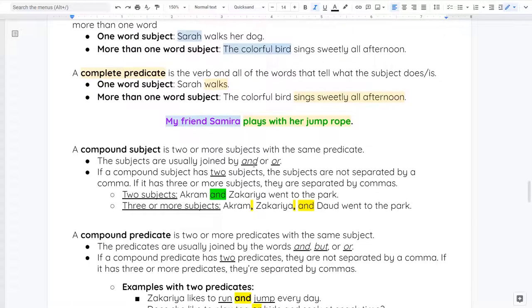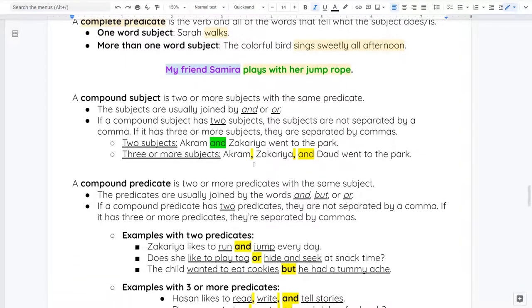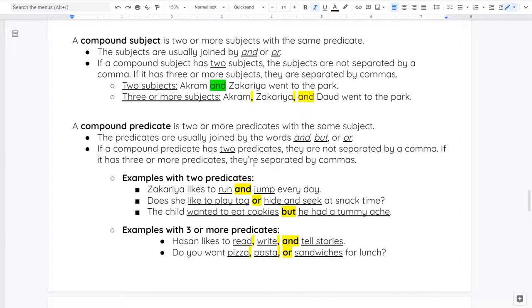We can also have what we call compound subjects and compound predicates. A compound subject is two or more subjects with the same predicate. The subjects are usually joined by the words and or or. If a compound subject has two subjects, the subjects are not separated by commas. If there's three or more subjects, then they are separated by commas. A compound subject that has two subjects: I can say Akram and Zecharia went to the park. So my two subjects are Akram and Zecharia. They're joined by the word and. If there's three subjects or three or more, I'm going to have to start using commas. I can say Akram comma Zecharia comma and Dawood went to the park. A compound subject has a lot of different people, two or more, that are all doing the same thing.